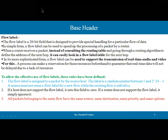The third field is the Flow Label, a 20-bit field designed to provide special handling for a particular flow of data. In a simple form, the flow label can be used to speed up the processing of data by the router. This is an extra feature — instead of consulting the routing table and going through routing algorithms to define the next hop, the router can look up the flow label table for the next hop.